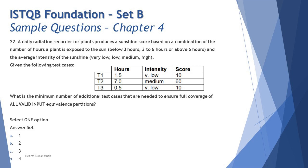The average intensity of the sunshine can be classified into four categories: very low, low, medium, and high. Given the following test cases, what is the minimum number of additional test cases needed to ensure full coverage of all valid input equivalence partitions? A lot of us have this confusion when we come to equivalence partitioning.